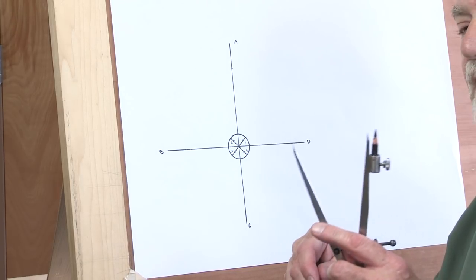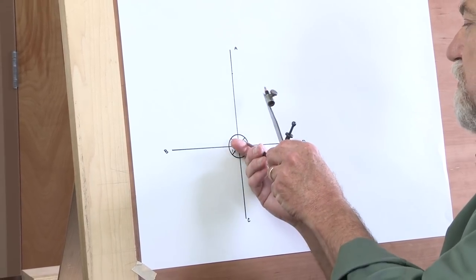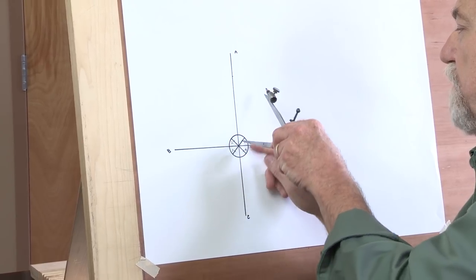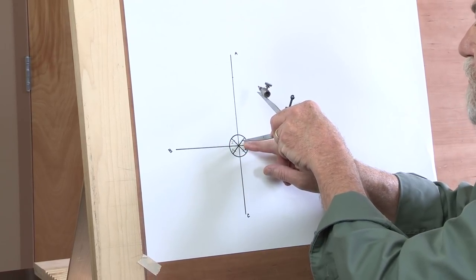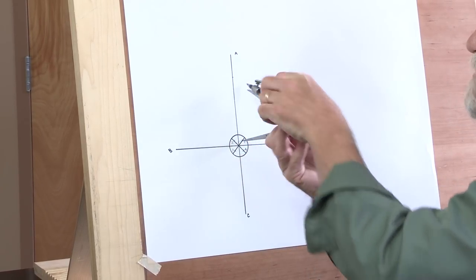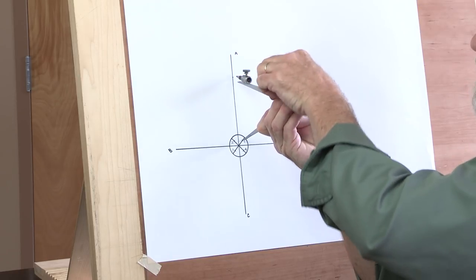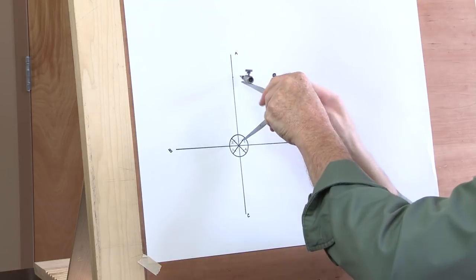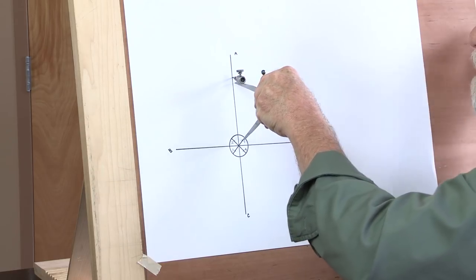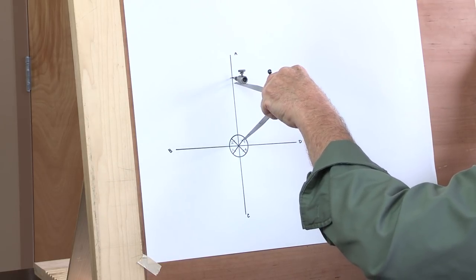Now I take my compass and put the pivot point on that first reference marked one. I adjust the pencil up here to my starting point and draw one quarter circle.